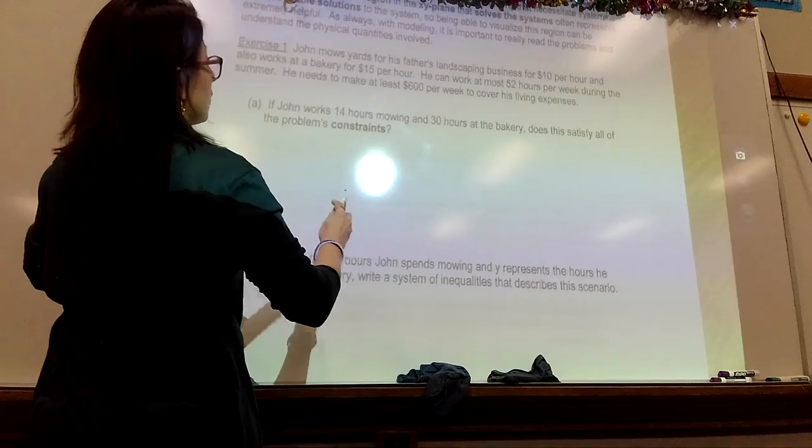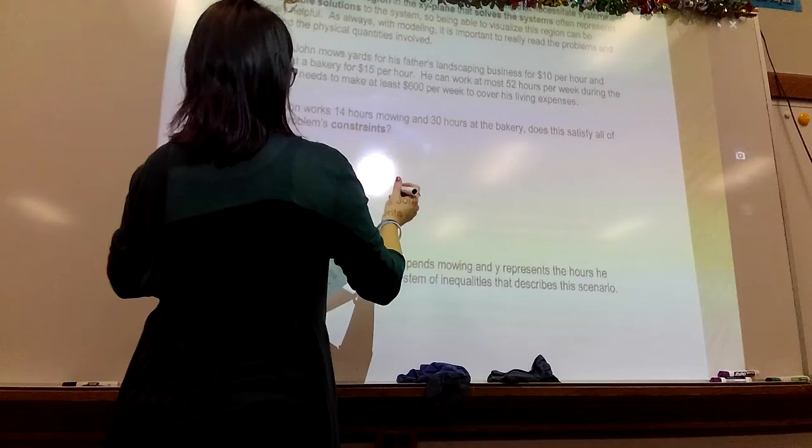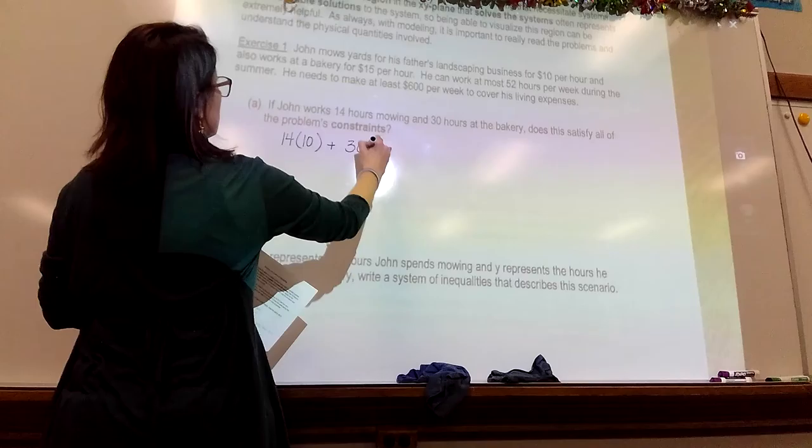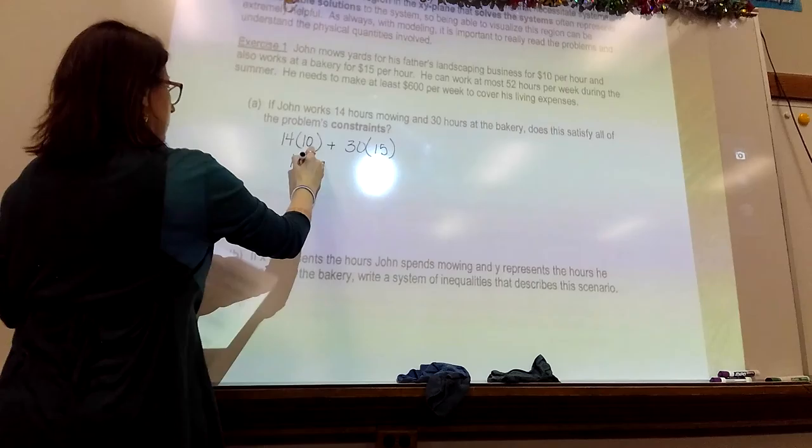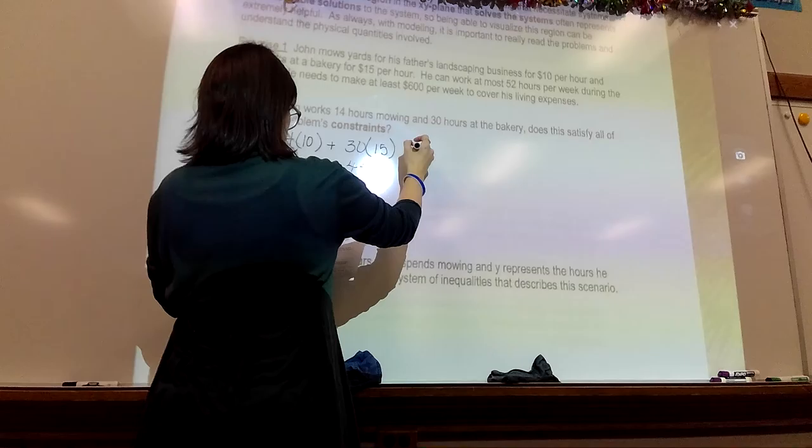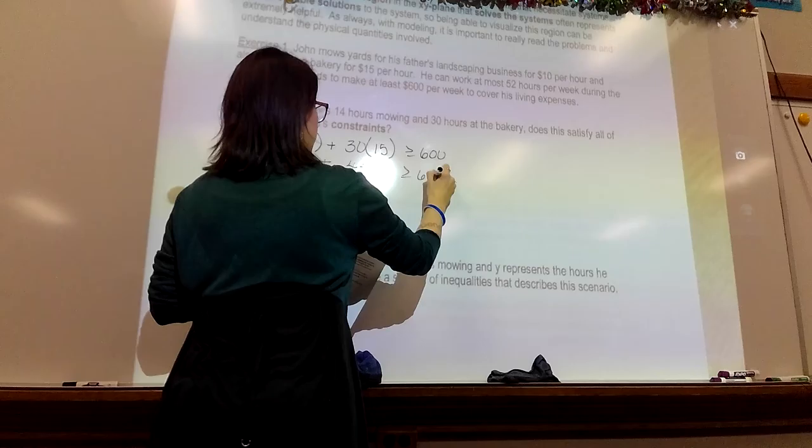Okay, let's see. 14 hours mowing times $10 plus 30 hours at $15 an hour for working at the bakery. That's $140, that's $450, that's $590.